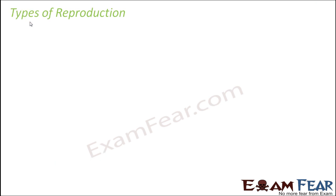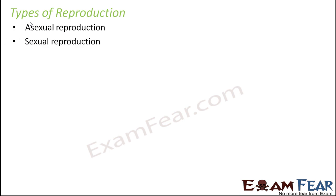Now when you talk about types of reproduction, there are broadly two types: asexual reproduction and sexual reproduction. These are broadly the two different modes of reproduction. There are organisms which reproduce only sexually — for example, human beings. There are organisms which can reproduce both sexually and asexually — for example, plants.